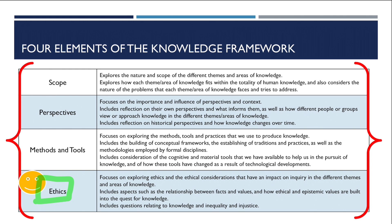I borrowed this table from the IB website. If you look at the ethics box, the first line says the focus is on exploring the ethical considerations that have an impact on inquiry in the different themes and areas of knowledge. This first line is related to the ethical obligation that the prescribed title mentions — do human scientists have to follow ethical obligation during their inquiry process? The second line says it includes aspects such as the relationship between facts and values, and how ethical or epistemic values are built into the quest for knowledge. This is the line to think about when choosing your examples.